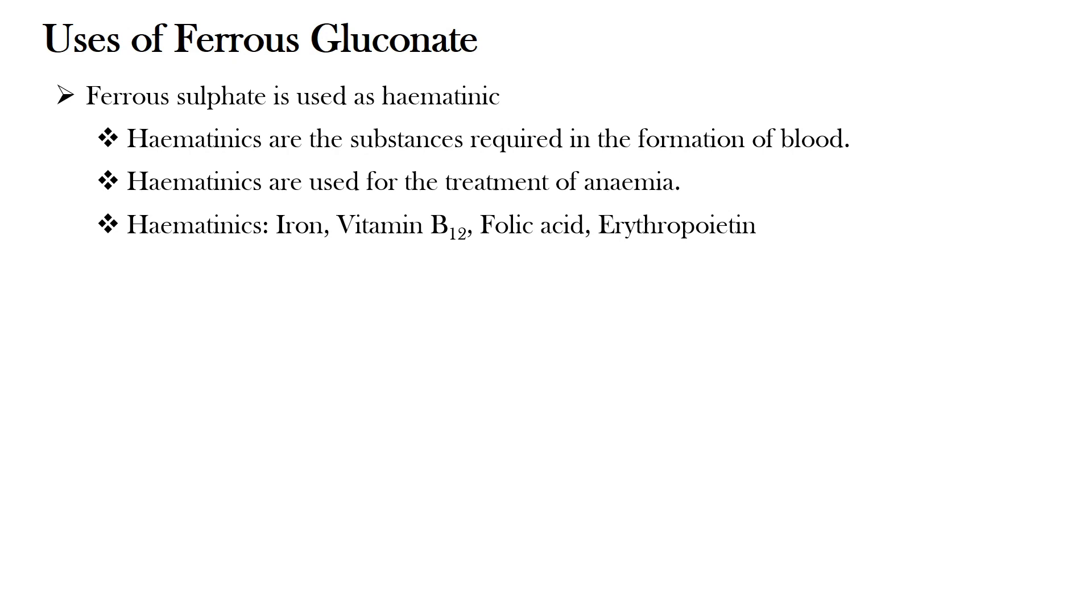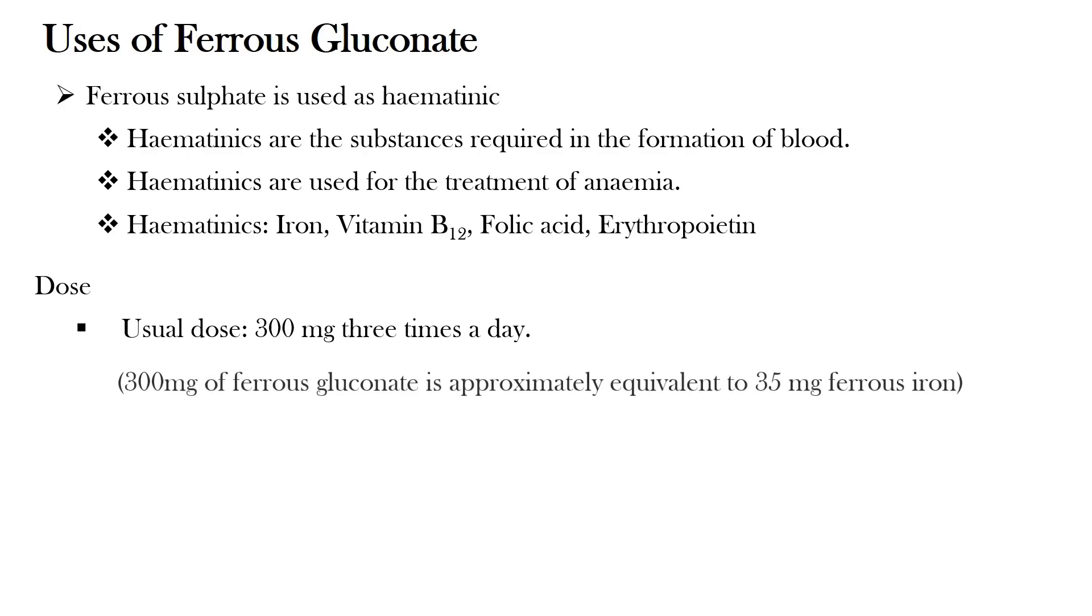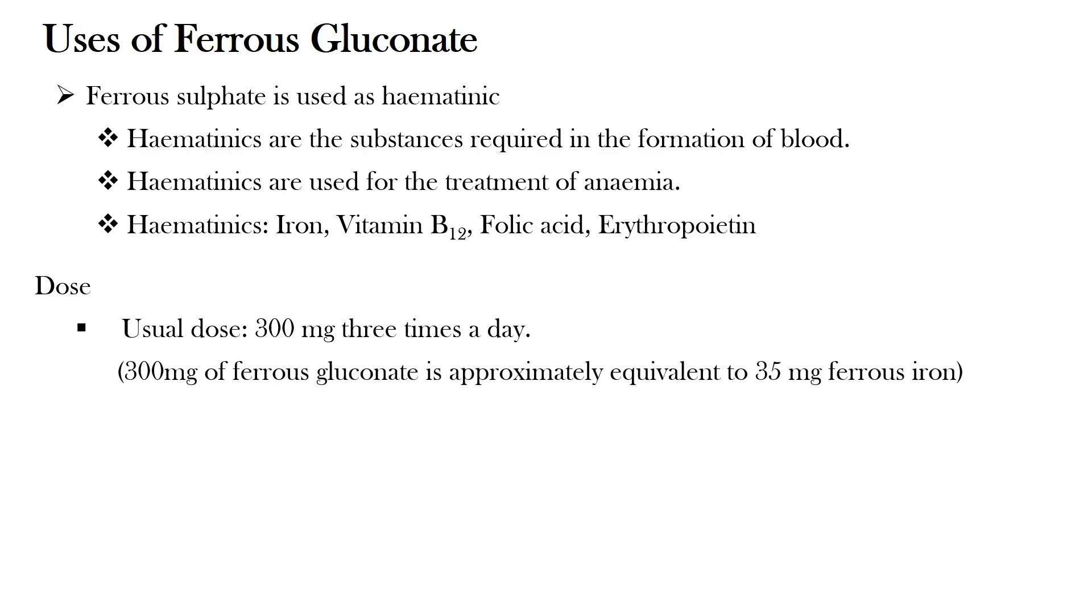The usual dose of Ferrous Gluconate is 300 mg three times a day. 300 mg of Ferrous Gluconate is approximately equivalent to 35 mg of ferrous iron. The prophylactic dose is 600 mg, whereas the therapeutic dose is 1.2 to 1.8 g daily in divided doses.